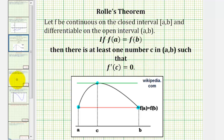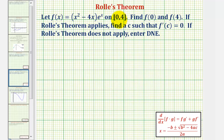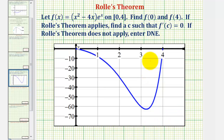Going back to our example, if we look at our function over this closed interval, it would look like this. Notice how f of zero and f of four both equal zero. The function is continuous and differentiable, and therefore by Rolle's theorem there's a value of c where f prime of c equals zero, which looks like it would be here — because at this point on the function, the tangent line would be a horizontal line, meaning the slope is zero, and therefore the first derivative at this value of c would be zero.